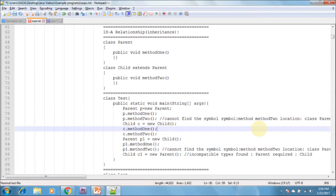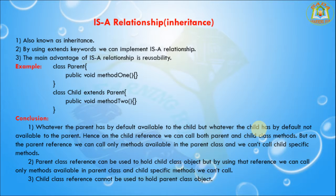Whenever the parent has something, it is by default available to the child. But whatever the child has is not by default available in the parent. Hence, using a child reference we can call both parent and child class methods, but on a parent reference we can call only methods available in the parent class. Parent class reference can be used to hold the child class object, but by using that reference we can only call methods available in the parent class — child-specific methods we can't call.